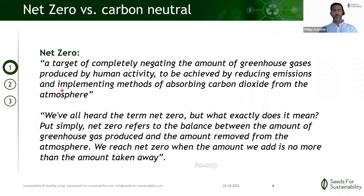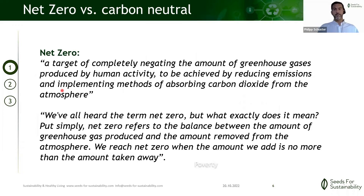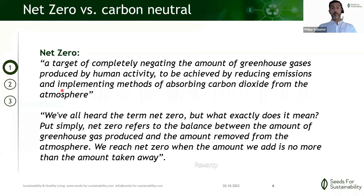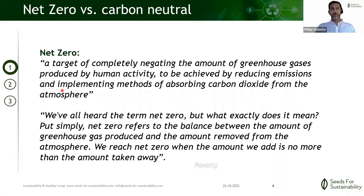So, net zero — one possible definition we could work with: net zero is a target of completely negating the amount of greenhouse gases produced by human activity, to be achieved by reducing emissions and implementing methods of absorbing carbon dioxide from the atmosphere. CO2 is not the only greenhouse gas, but maybe the most common one, and the biggest quantity shaping climate change, although others can be even worse in intensity.